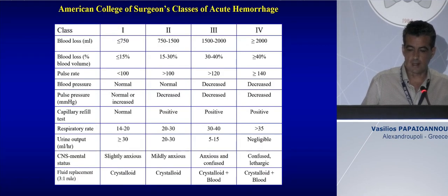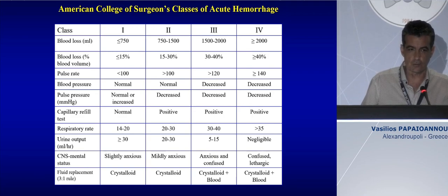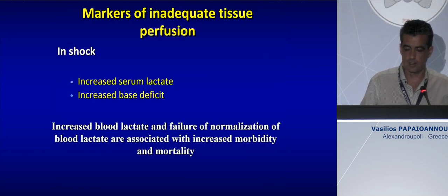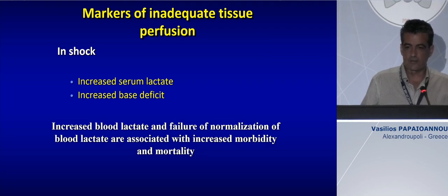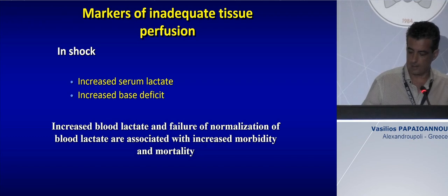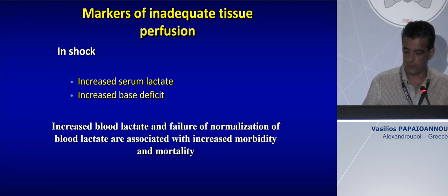I remind you of the ATLS guidelines, where blood pressure will be decreased in cases of shock class 3, meaning more than 30 to 40% of blood loss. So we have to be prudent about the clinical signs of hypotension in the first hours of ICU patients. The major surrogate markers for inadequate perfusion are increased serum lactate and increased base deficit, i.e., metabolic acidosis. When these markers do not normalize with fluid therapy and vasopressors, this actually means increased mortality and morbidity.